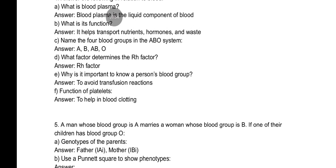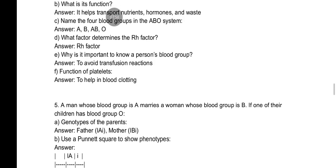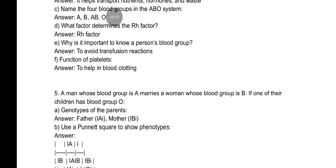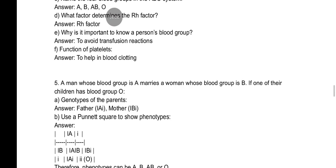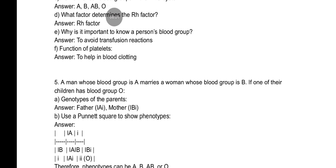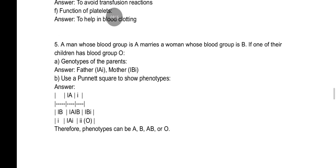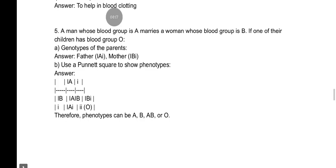The blood groups in the ABO system are: A, B, AB, and O. The Rhesus factor also determines blood group results. It is important to know a person's blood group in order to avoid transfusion reactions.